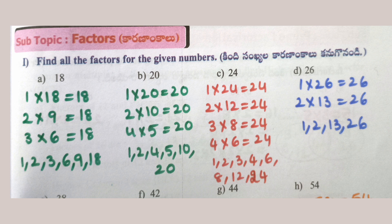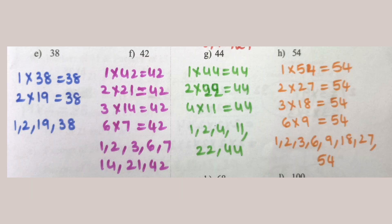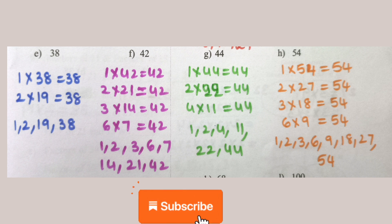26: 1×26=26, 2×13=26. So factors of 26 are 1, 2, 13, 26. 38: 1×38=38, 2×19=38. So factors of 38 are 1, 2, 19, 38.